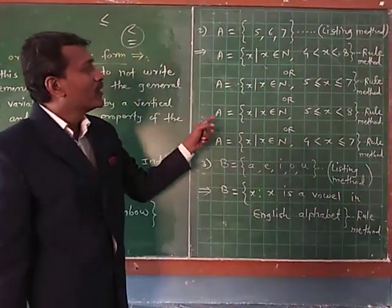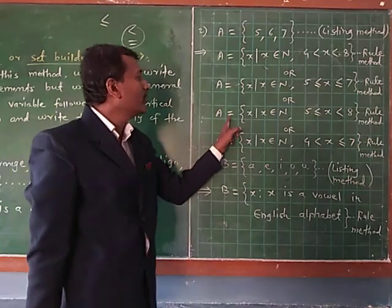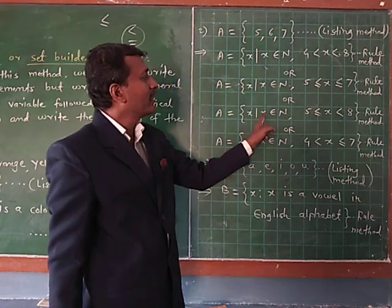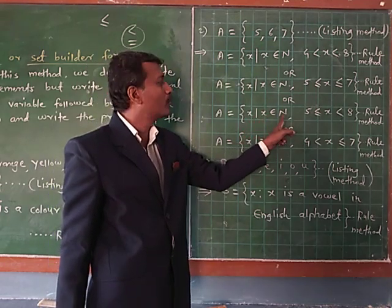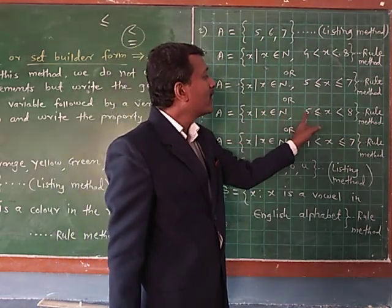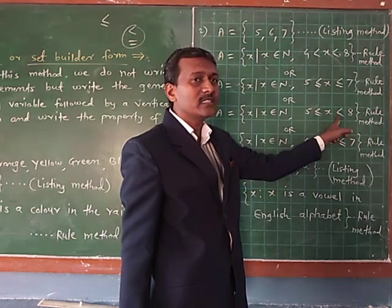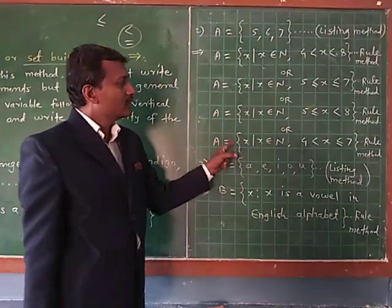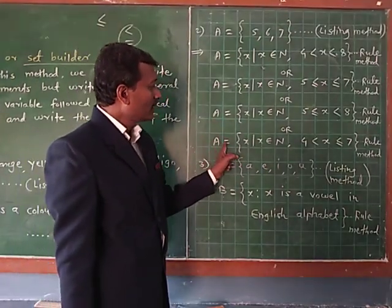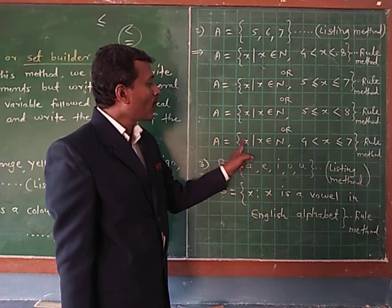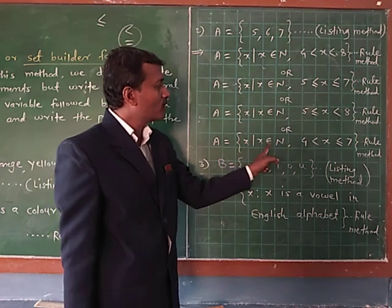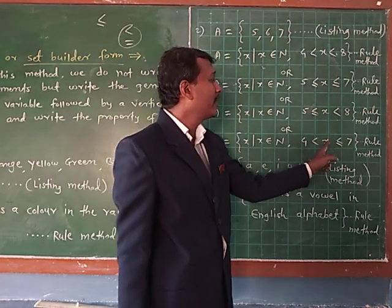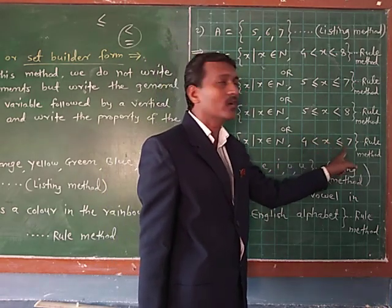Also, this example can be written as: A = { x : x belongs to N and 5 ≤ x < 8 }. Again, this example can be written as: A = { x : x belongs to natural number and x > 4 and x ≤ 7 }.